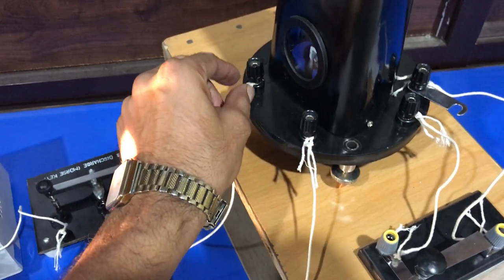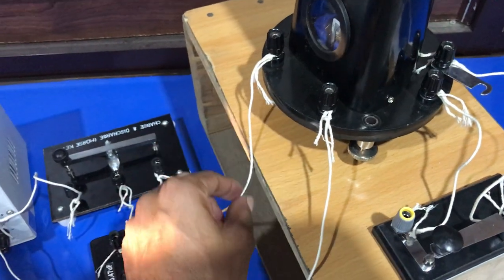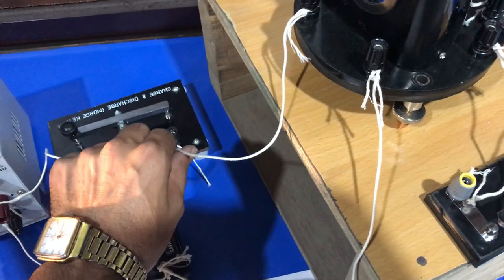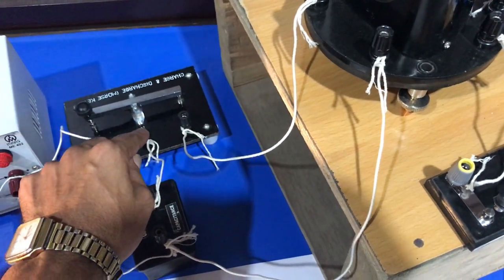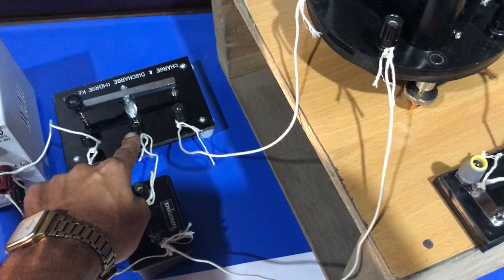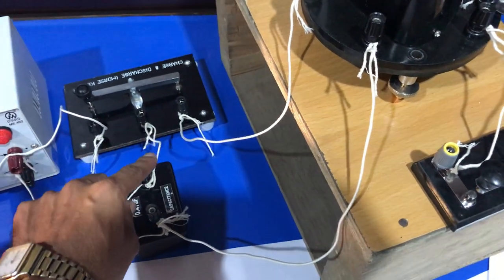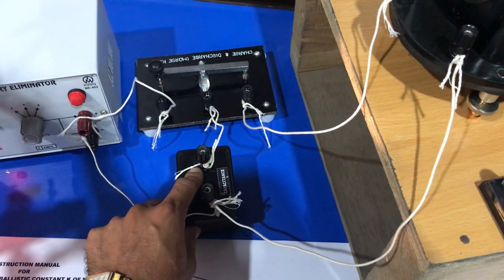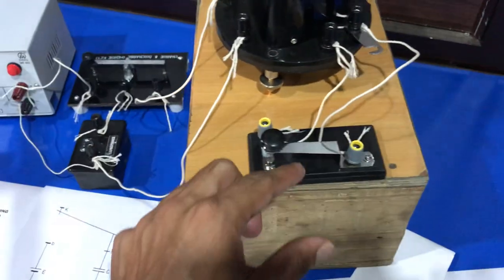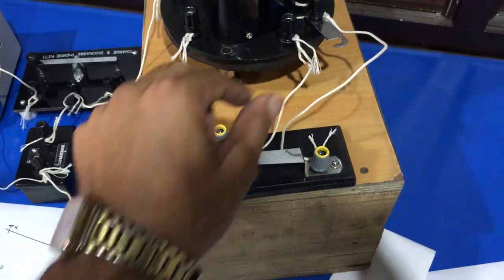The second end of the ballistic galvanometer is connected to point A of the Morse key. The middle point, or point B of the Morse key, is connected to the second point of the standard capacitor, and the tapping key is connected here.